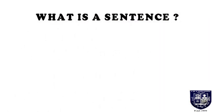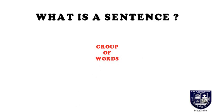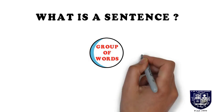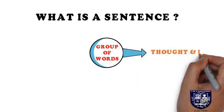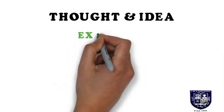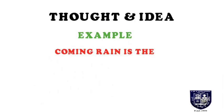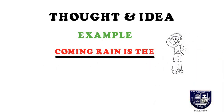Firstly, what is a sentence? A sentence is a group of words providing us a meaningful statement. It has three characteristics. Firstly, it expresses thought and idea. For example, if I give you an example: 'coming rain is' — is it a sensible sentence? Does it make any sense?